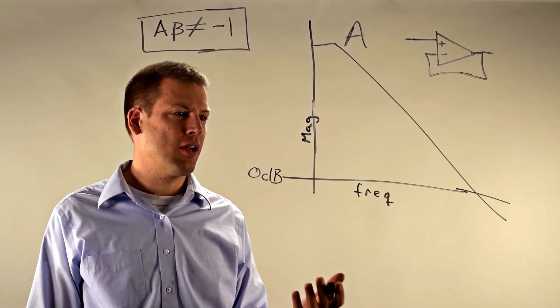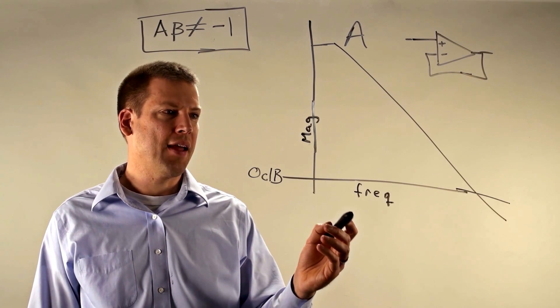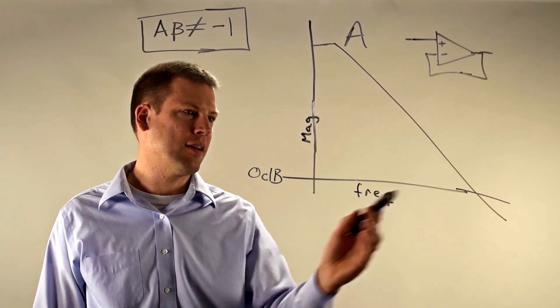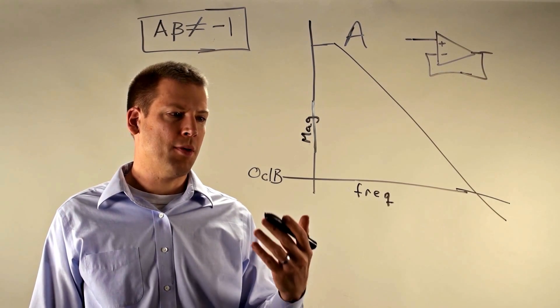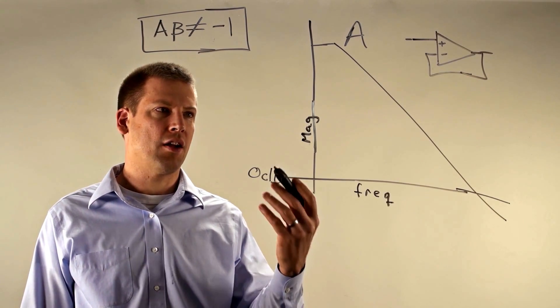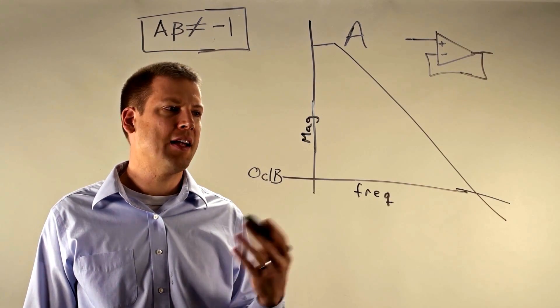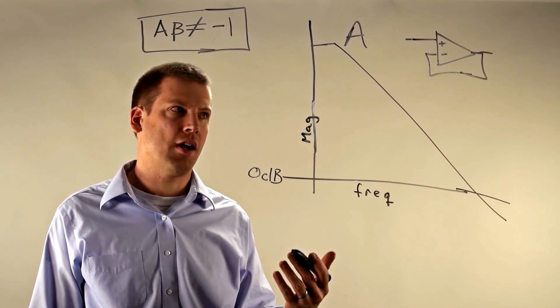So the vast majority of op amps on the market are stable at a gain of 1 and they have an open loop gain graph that looks like this. Remember our rule is for the loop gain of our circuit which is A times the feedback cannot equal minus 1 or cannot have a phase shift of 180 degrees.